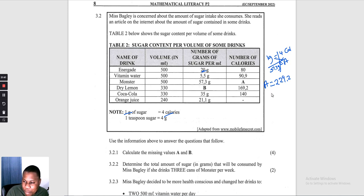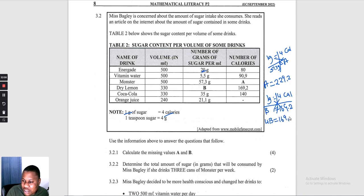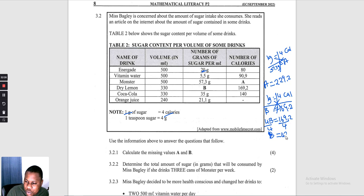For value B: we are given 169,2 calories which equals B grams. Since 1 gram = 4 calories, cross multiplying: 4B = 169,2. Dividing both sides by 4: B = 169,2 ÷ 4 = 42,3 grams. Therefore B = 42,3 grams.